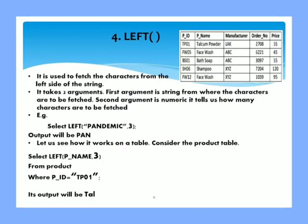Fourth string function is LEFT. It is used to fetch characters from the left side of the string. It takes two arguments. First argument is of string type from where the characters are to be fetched, and the second argument is numeric. It tells us how many characters are to be fetched. For example, suppose here we have written select left PANDEMIC comma 3. From where we have to fetch the data? Pandemic. How many characters? Three. From which side? Left side. So we will start from the left side: PAN, three characters. So the output will be PAN.